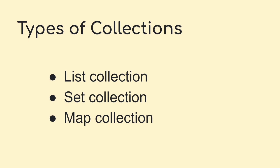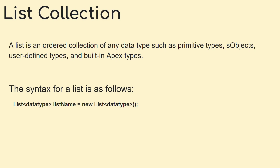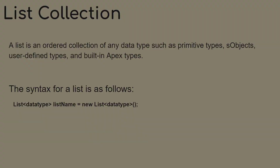There are three different types of collections: first is list, then set, and then map. A list is an ordered collection of any data type, such as primitive types, objects, user-defined types, and built-in Apex types. The syntax for this is as shown.